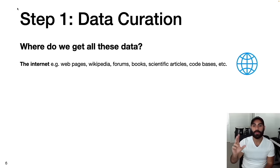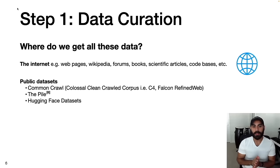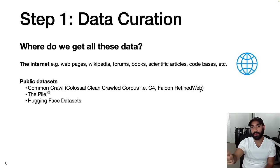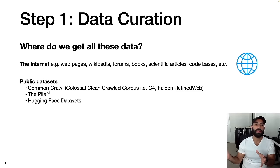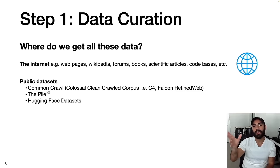Post-ChatGPT, there's a lot more controversy around web scraping and copyright laws. The risk is that you might grab data you're not supposed to, and using it for commercial purposes could cause trouble down the line. Alternatively, there are many public datasets. One of the most popular is Common Crawl, a huge corpus of text from the internet. There are also refined versions such as Colossal Clean Crawled Corpus (C4), Falcon Refined Web, which was used to train Falcon 180B, and the Pile, which brings together a wide variety of diverse data sources. Hugging Face has also emerged as a major player, housing a ton of open-access data sources on their platform.